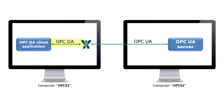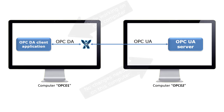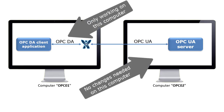Now OPC Quick Client will be able to make a local connection using OPC DA. OPC Expert makes a connection to OPC Foundation UA sample server using OPC UA. Let's set up this OPC UA to DA conversion.